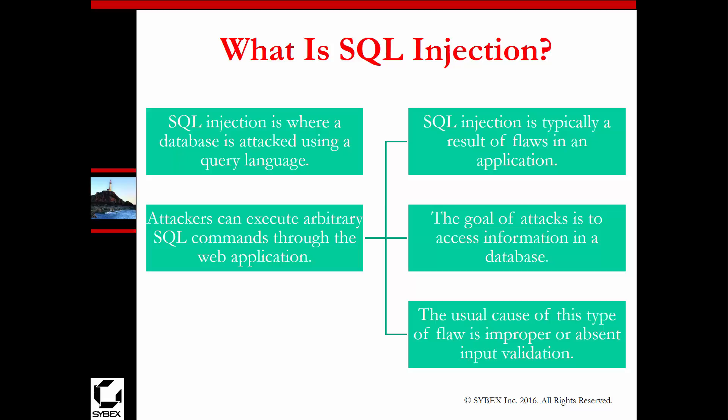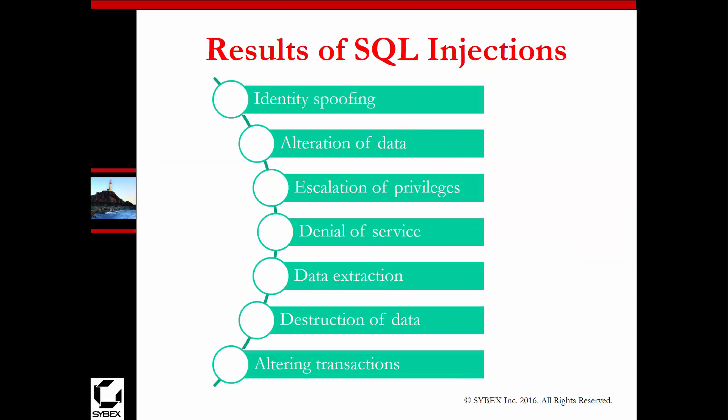That was the entire intent of that SQL injection — just to modify the database so that they could all get different payday loan prices or have their payday loan forgiven. The results of an SQL injection include alteration of the data, some type of data extraction or data modification, altering transactions, or long-term data destruction.